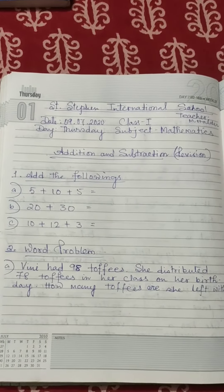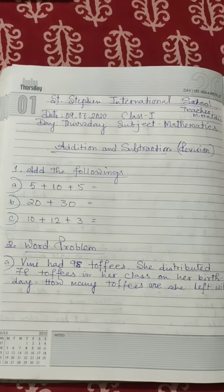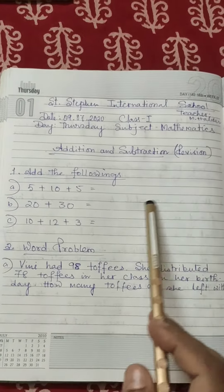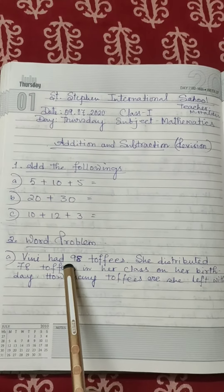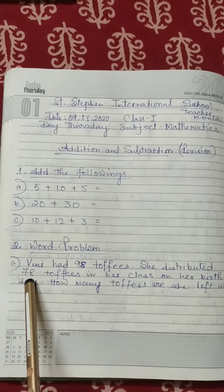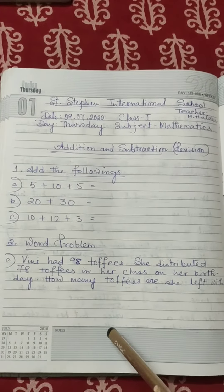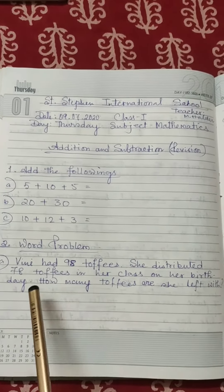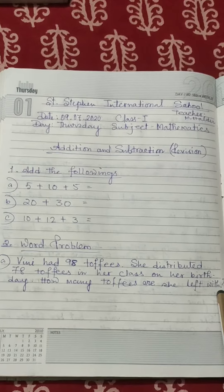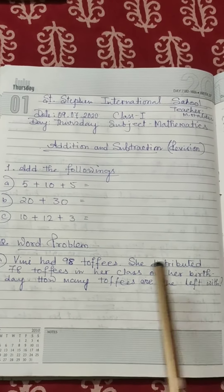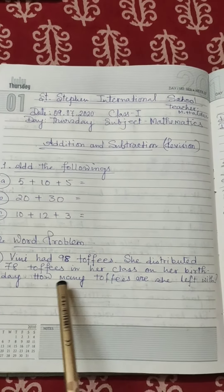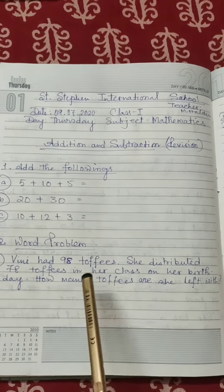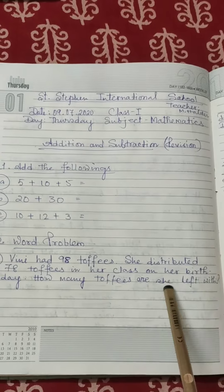Kitna toffees uske paas hai? What you have to do? You have to subtract it. First you will write the bigger number 98, then minus 78. And what the answer will be? You will write in a proper sentence, as I have taught previously. In answer, you will write: there are that many toffees she is left with.